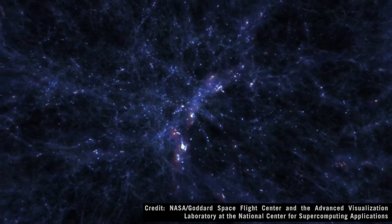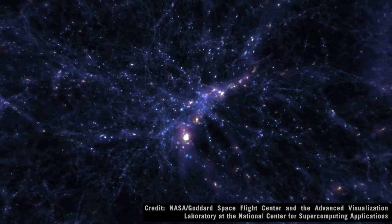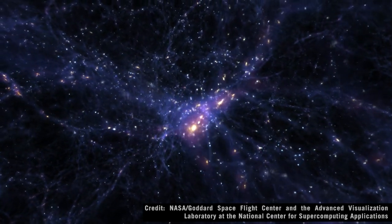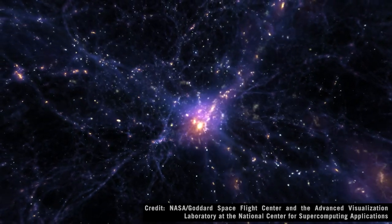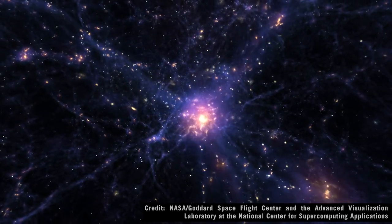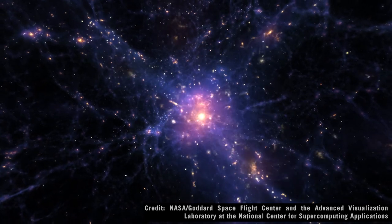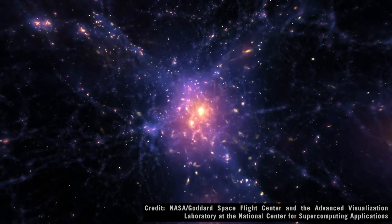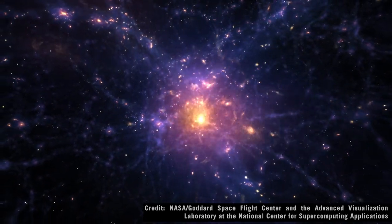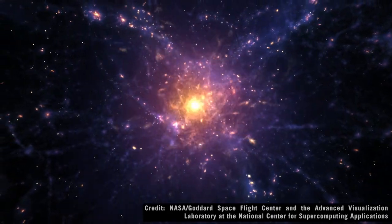And over time, the areas that were a little more dense attracted matter, just because of gravity. So if you have an area that's a little more dense, that causes other matter to be attracted there. And over millions of years, it just gets denser and denser and denser until the point where you start forming stars and galaxies.